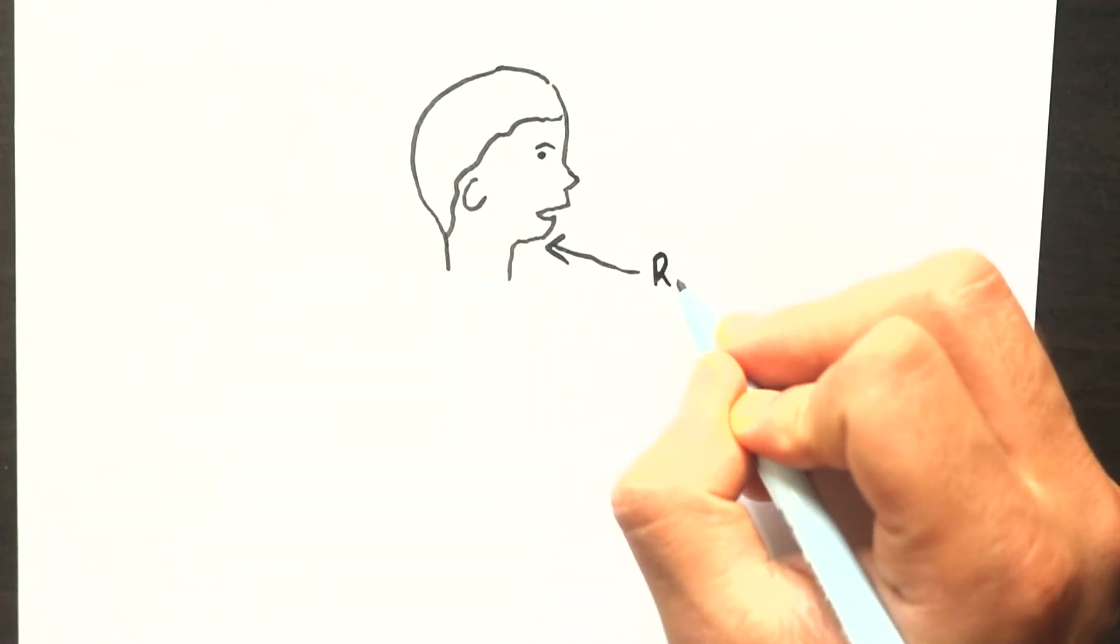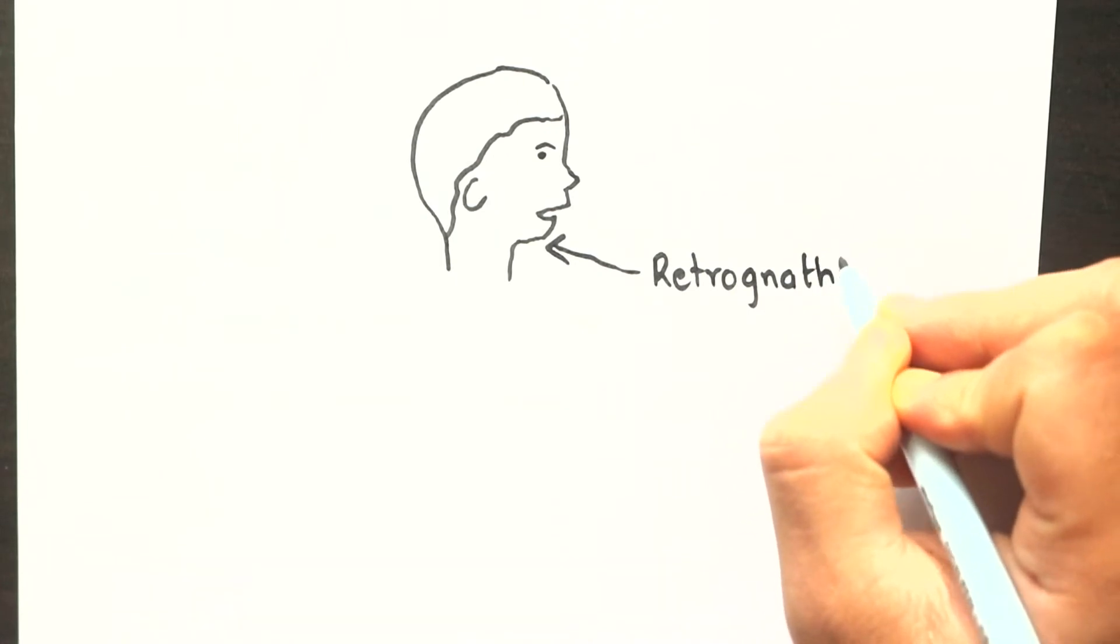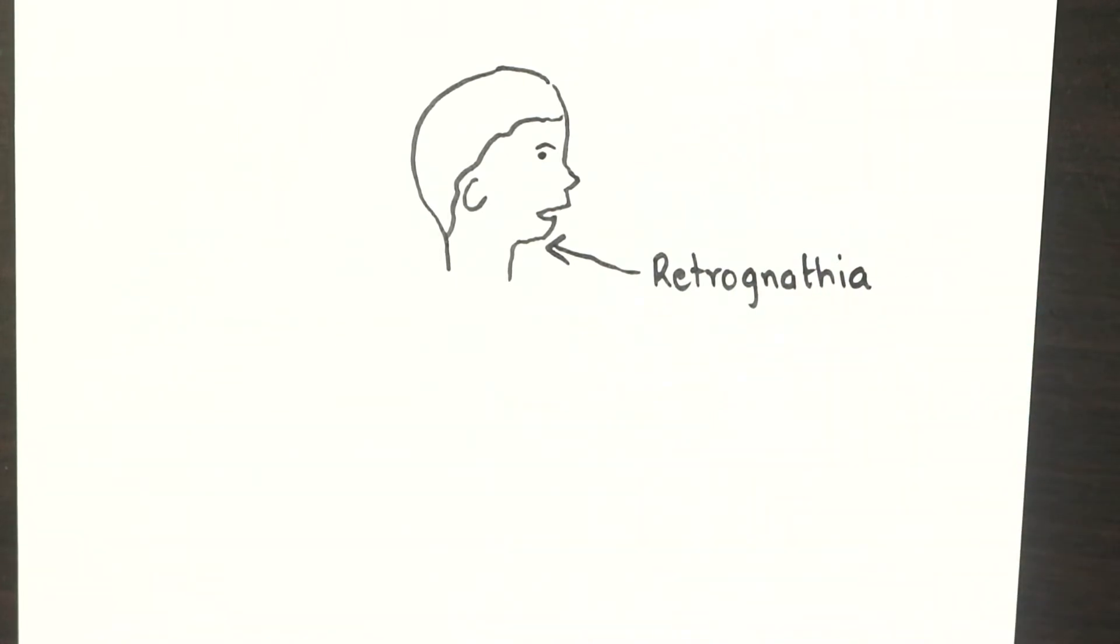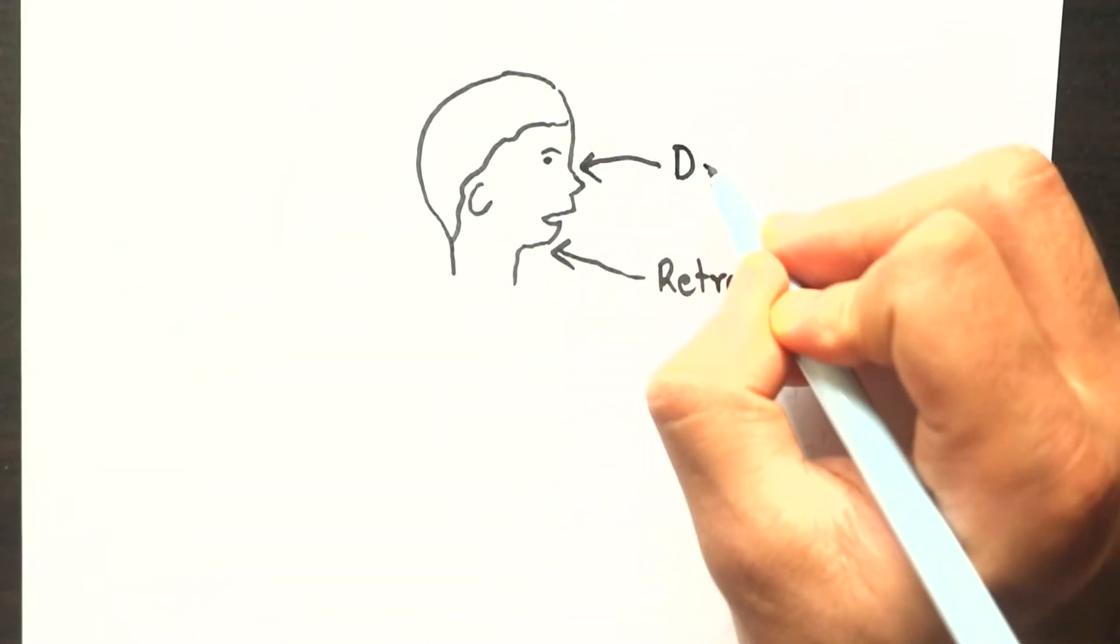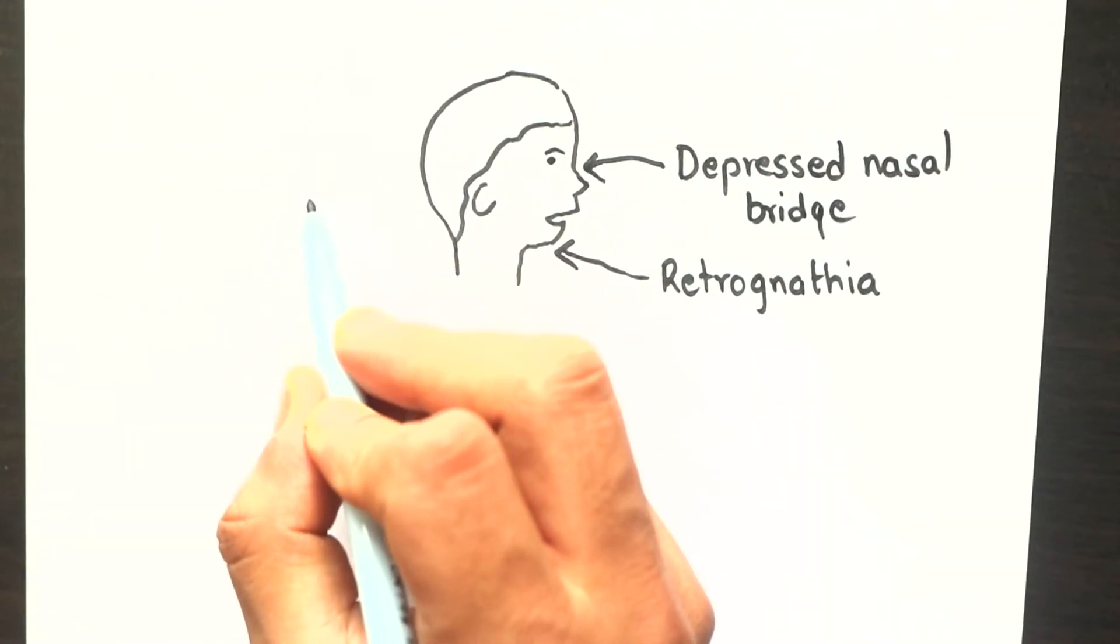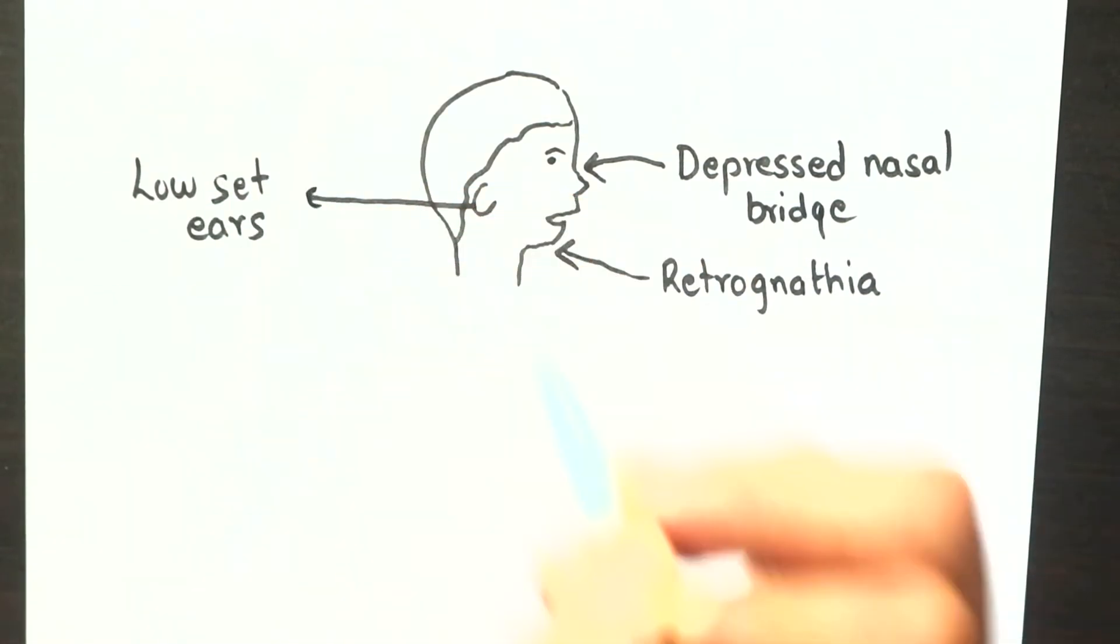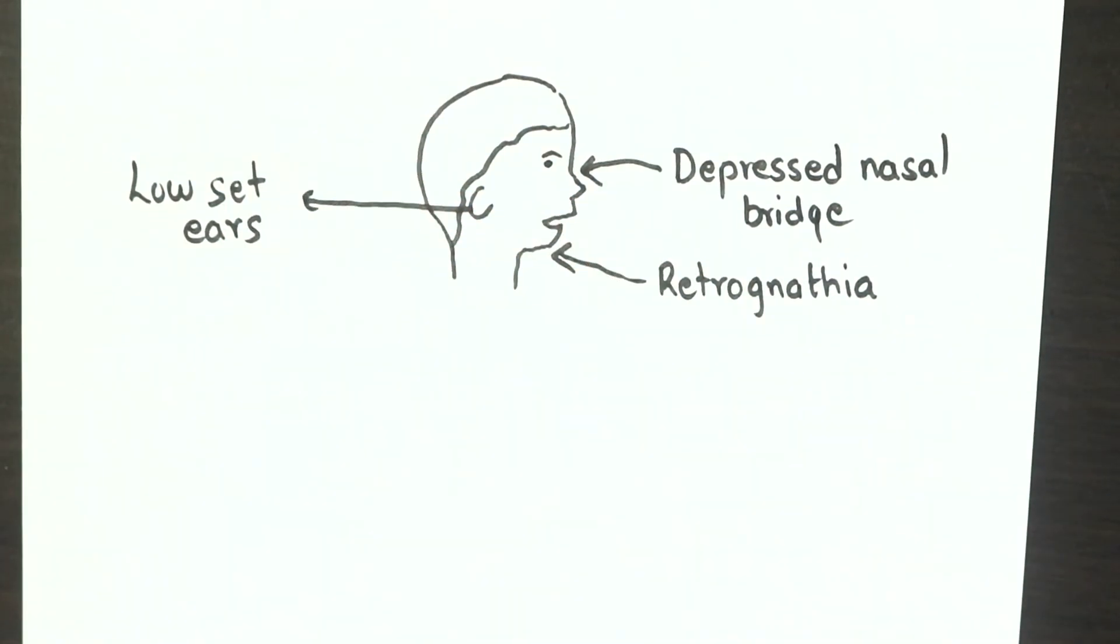Retrognathia - it is a condition in which the lower jaw is set further back than the upper jaw. There is depressed nasal bridge and low set ears, in which the ear is situated below the normal location. These lack cartilage and are also called Potter's ears.